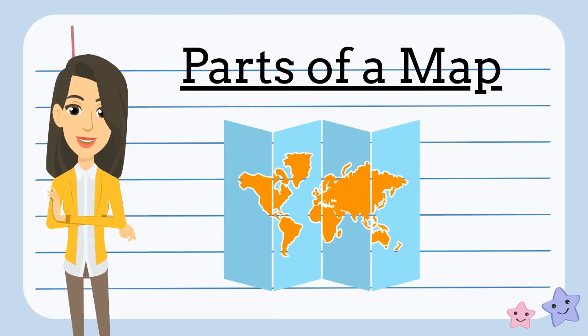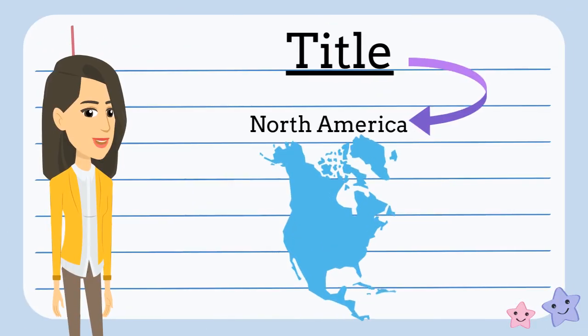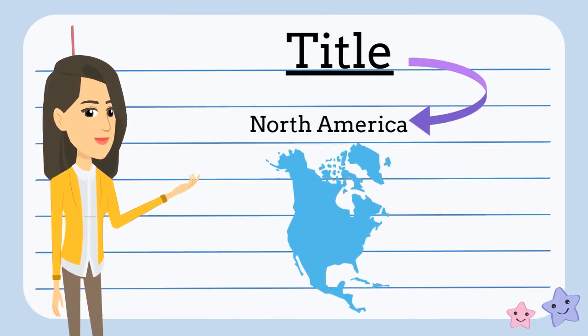There are many parts of a map that help us find out where we are going. The first part of a map is the title. This tells us what kind of map it is. For example, this is a map of North America.